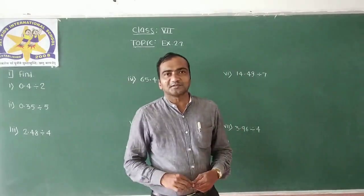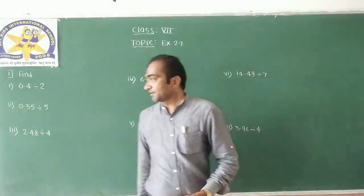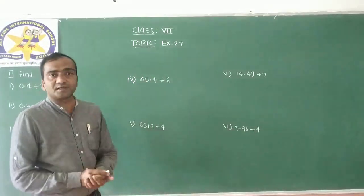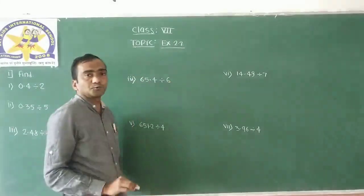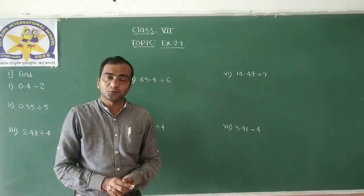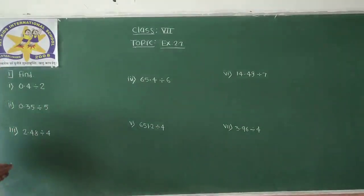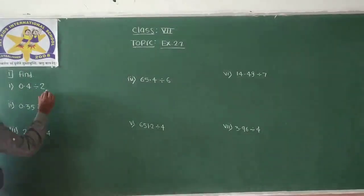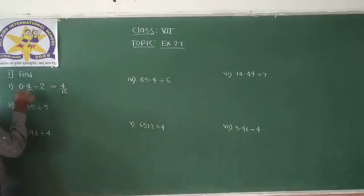Hello, my dear students, good morning and welcome to the next lecture. Today we are starting our last exercise, exercise number 2.7. The first question is: can 0.4 be written as 4 divided by 10, since there is one digit after the decimal point?